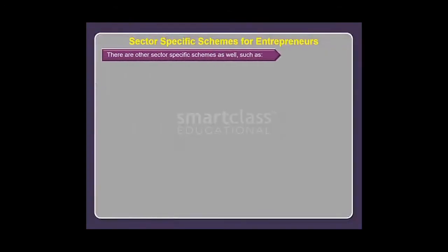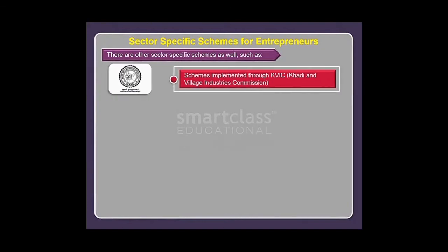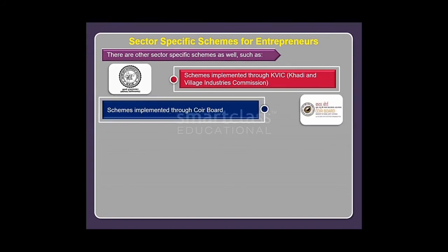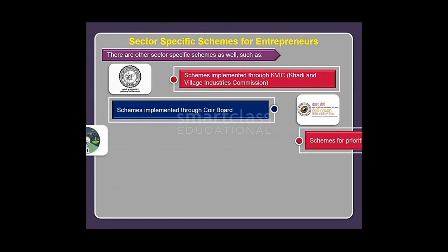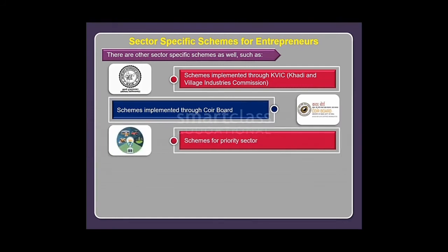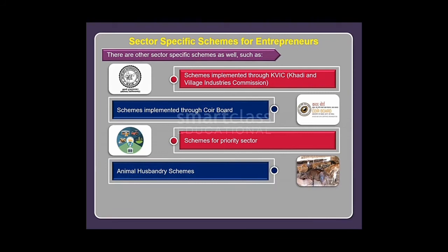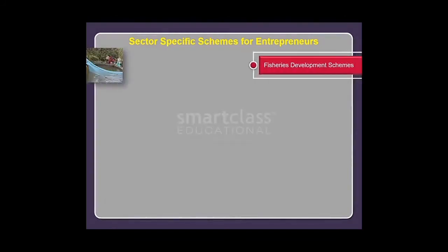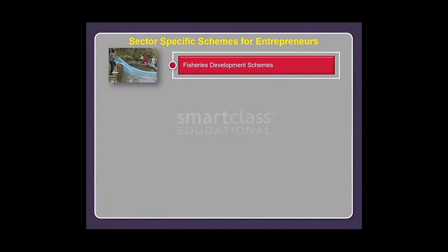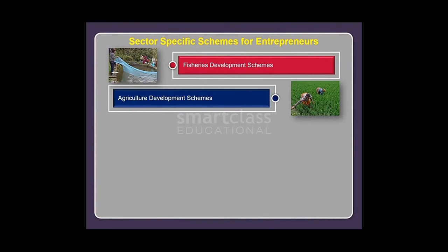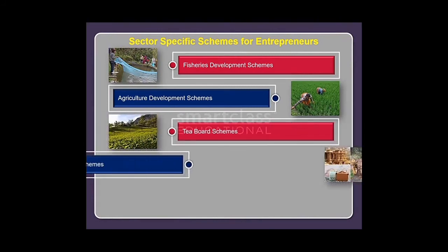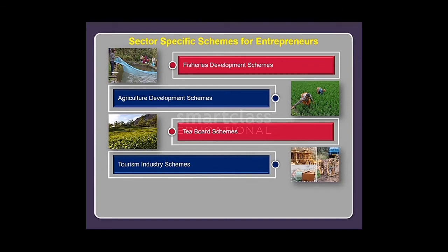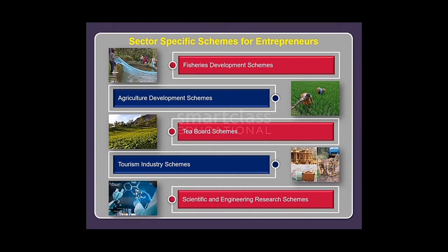There are other sector-specific schemes as well, such as schemes implemented through KVIC — Khadi and Village Industries Commission — schemes implemented through the Coir Board, schemes for the priority sector including animal husbandry schemes, dairy development schemes, fisheries development schemes, agriculture development schemes, tea board schemes, tourism industry schemes, and scientific and engineering research schemes.